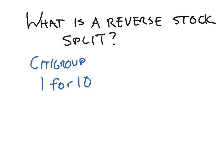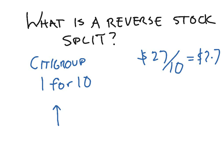So what they did was, their price right now is about $27 per share. And when they did this 1 for 10, if you just divide the 27 by 10, that equals $2.70. Basically, companies do this to increase share price by reducing the number of shares.